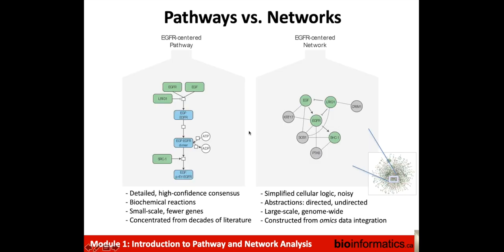What are pathways and how are they different from networks? Pathways are usually detailed high-confidence models of a biological process, usually formed with steps. We might have biochemical reactions as part of the pathway, and the models are developed based on many years of study and many publications — for instance, the EGF receptor pathway or metabolism. Networks, on the other hand, are sets of relationships between genes of different types. Genes could be activating or binding each other, representing a more simplified view of cellular logic. They're frequently noisier and often come from large-scale genome-wide assays, like co-expression relationships or large-scale protein interaction screens.